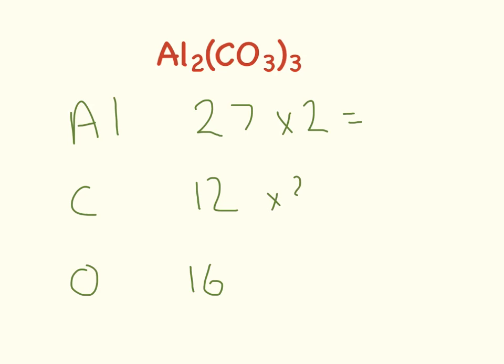We have 3 carbons and we have 9 oxygens. So 27 times 2 equals 54. 12 times 3 equals 36. 16 times 9 equals 144. Add those all together and we have 234.